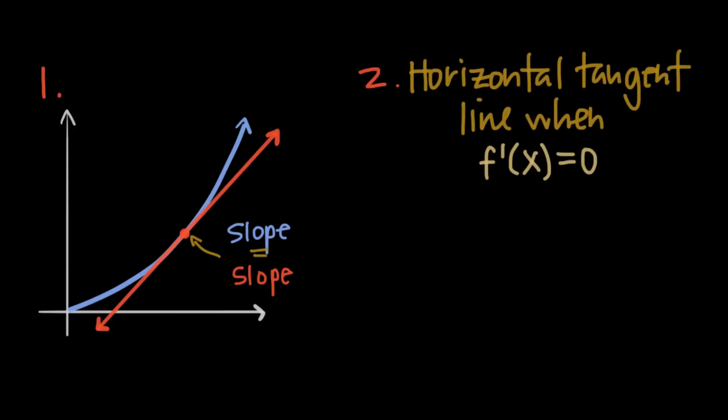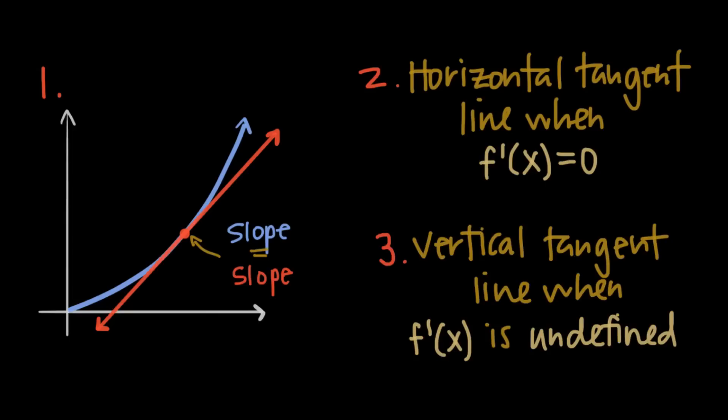Let's summarize everything we now know. The tangent line intersects the curve at the point of tangency, and the slope of the curve at the point of tangency is the same as the slope of the tangent line through that point. Horizontal tangent lines exist at any point where the derivative is equal to 0, and vertical tangent lines exist at any point where the derivative is undefined.